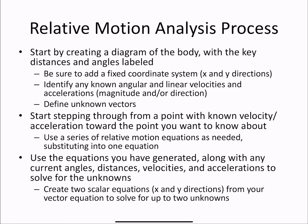The general process for completing a relative motion analysis problem is to start by creating a diagram of the body with key distances and angles labeled. Be sure to add a fixed coordinate system with X and Y directions. Add any known angular and linear velocities and accelerations, whether you know only magnitude, only direction, or both. And define unknown vectors.